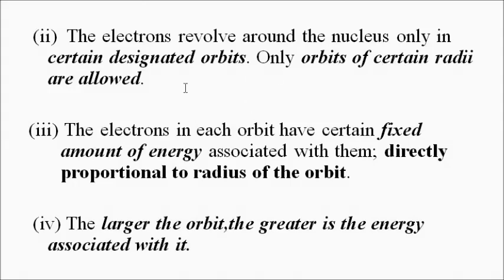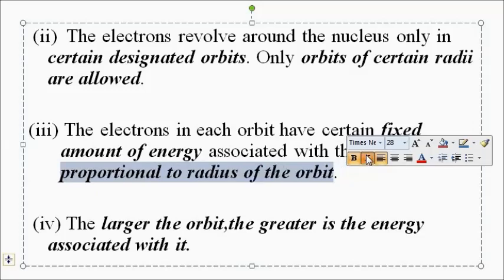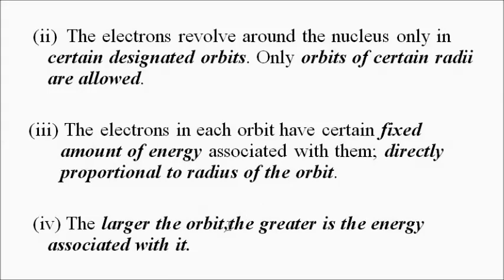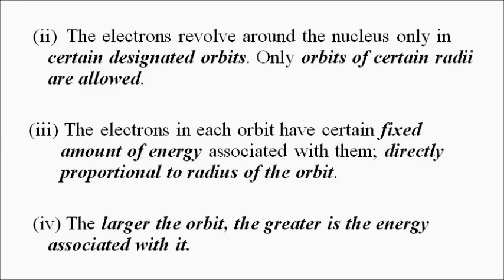All electrons revolving in a particular orbit have a fixed amount of energy associated with them, and that energy is directly proportional to the radius of the orbit. So the larger the orbit, the greater will be the energy associated with it.